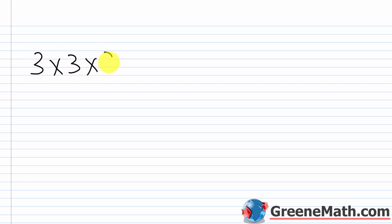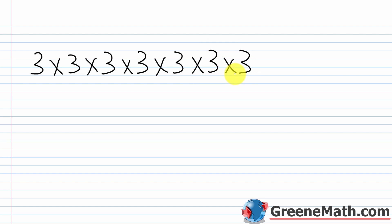So what exactly is an exponent? Let me show you through an example. Let's say we had something like 3 times 3 times 3 times 3 times 3 times 3 times 3. That takes up a lot of room on my sheet. I wish there was an easier way to write that. Well, in fact there is — using an exponent. Essentially, what I would do to write this in exponent form is I would count the number of 3s that I have there.